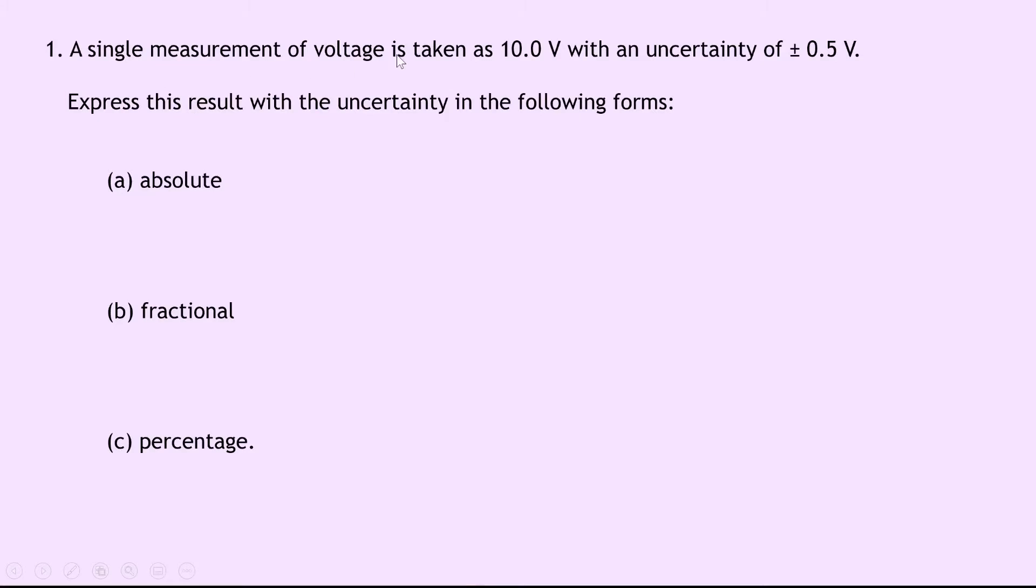Question 1 says that a single measurement of voltage is taken as 10.0 volts with an uncertainty of plus or minus 0.5 volts. Express this result with the uncertainty in the following forms. So we've got absolute for part A, fractional for part B, and percentage for part C.